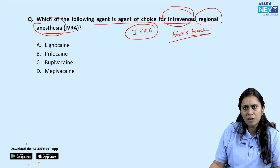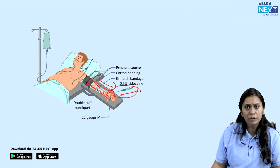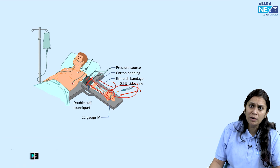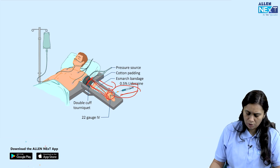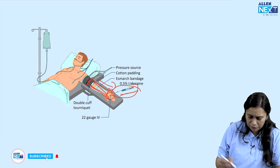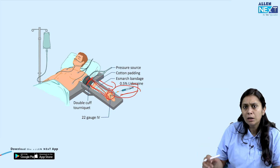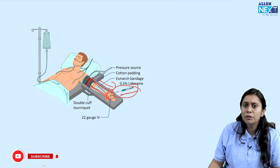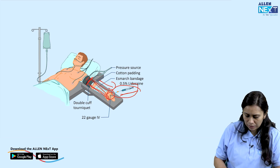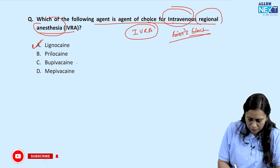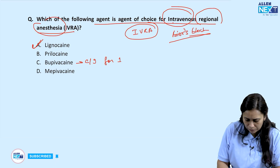For IVRA, if the tourniquet opens, the local anesthetic can enter systemic circulation causing life-threatening complications. To minimize this risk, we keep the tourniquet carefully inflated. To further increase the margin of safety, we use the safest local anesthetic available, which is lignocaine. Therefore, lignocaine is the agent of choice for IVRA.